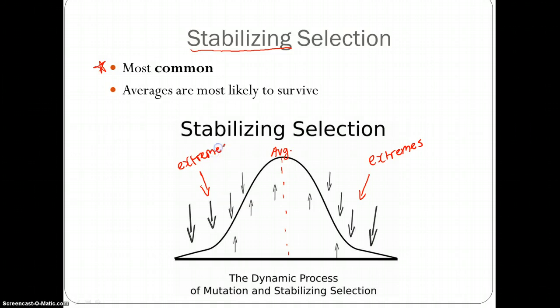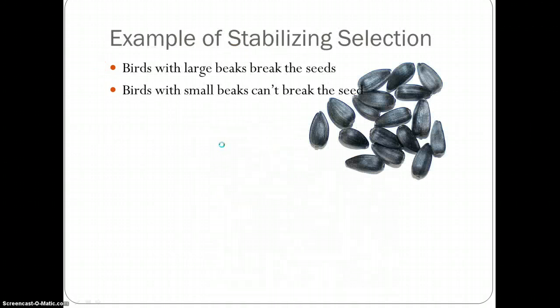So our example here. We have these seeds in a specific environment, in the local forest you could say. These special seeds require a beak that can specifically open the shell. In this example, large birds which have large beaks will break the seeds and lose the food within. Birds with small beaks cannot break the seed, causing them not to be able to get the food within.